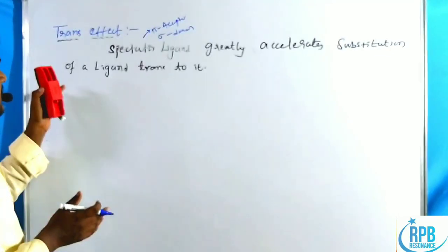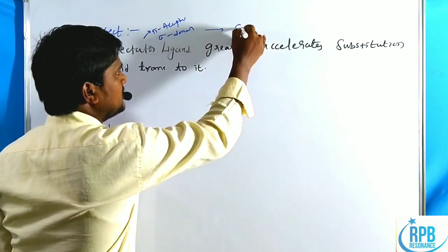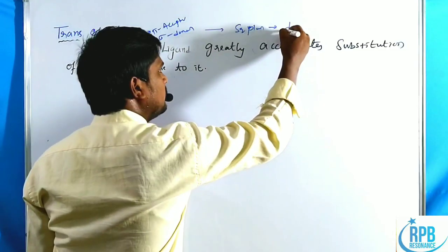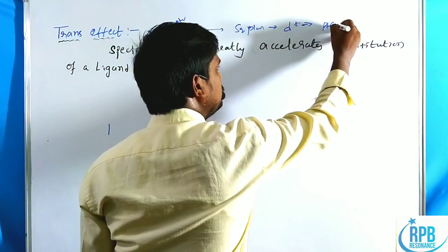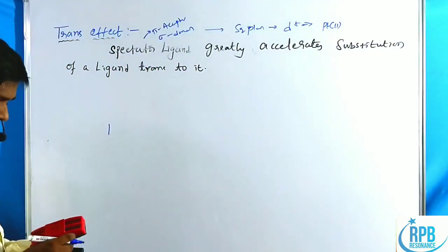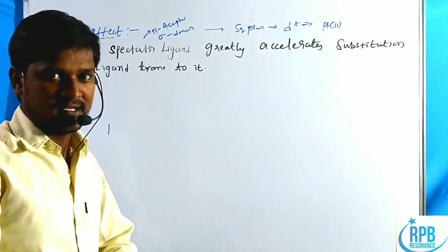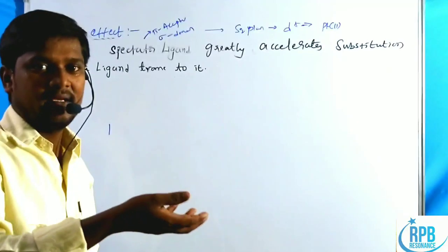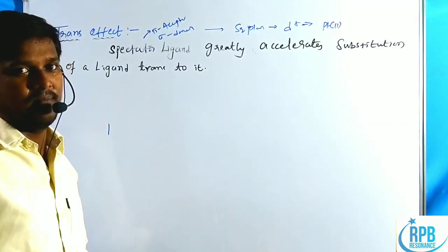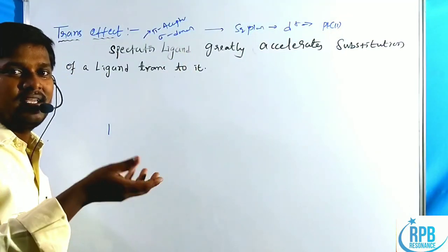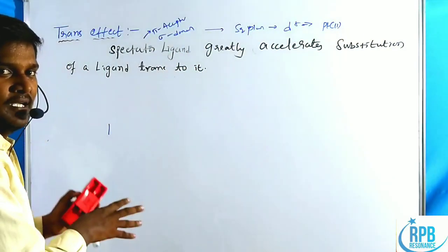The trans effect is observed in square planar complexes, specifically D8 complexes — most notably platinum(II) complexes. Most trans effect studies are done through platinum(II) complexes because of their low rate constant. When compared to palladium and nickel complexes, which are 10^6 and 10^7 times faster than platinum(II) complexes, the slow rate of reaction makes it easy to observe in laboratory reactions.